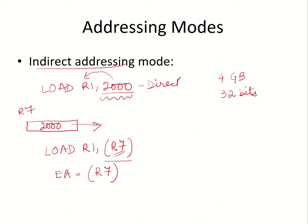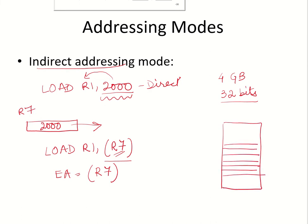The advantage of this addressing mode is: first, the number of bits needed to specify the address is reduced. Second, if I want to access subsequent memory locations, I can do so by incrementing this register each time in a loop. If in the first pass r7 contains 2000, I can increment r7 to point to the next word at 2004, then increment again to point to the next word at 2008.